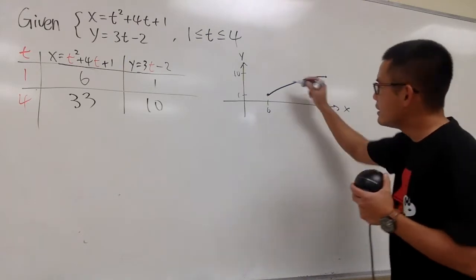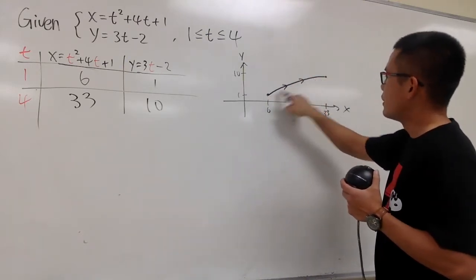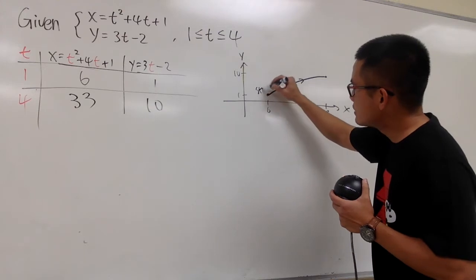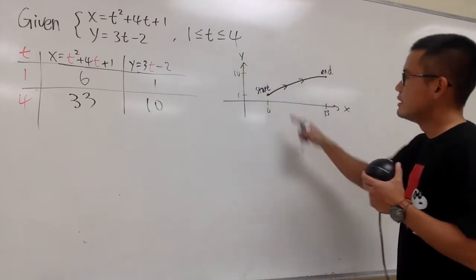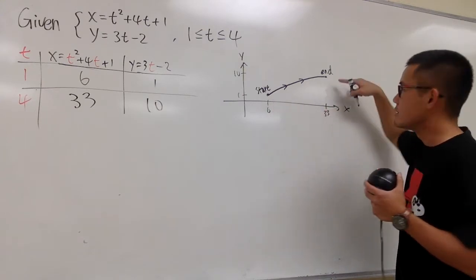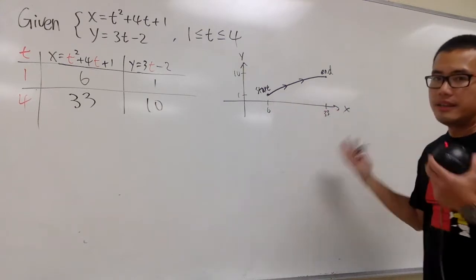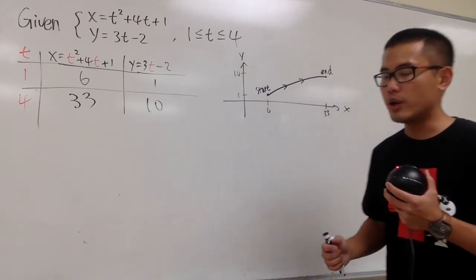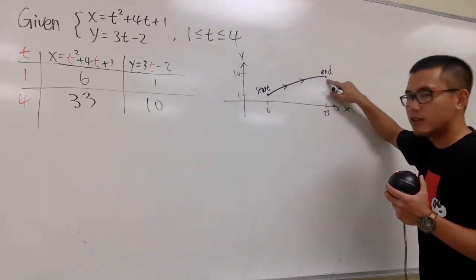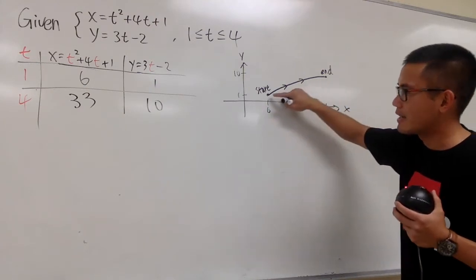And most importantly, you should know it's traveling from here to here. This is our start, and this is the end. This is when t is equal to 1, and this is when t is equal to 4. This is the pathway. And now the question is, how can I write a parametric equation so that I can start right here and then go back to that?